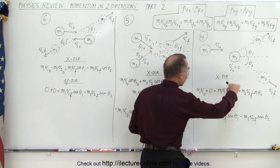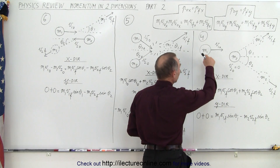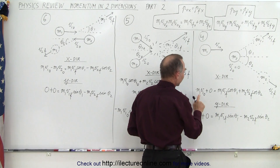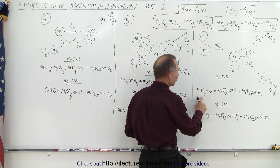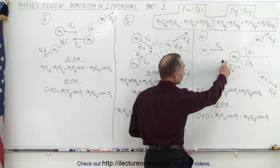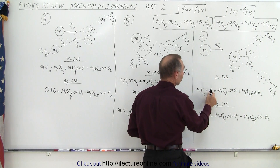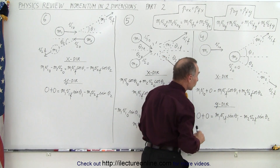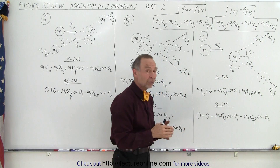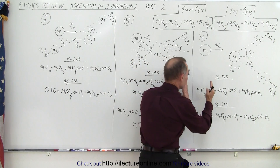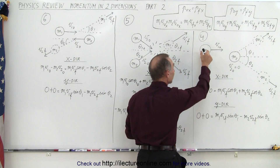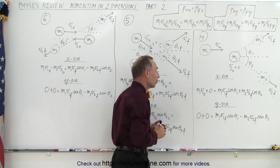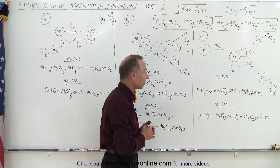In the x direction, notice that only one object is moving to the right, so it has its initial momentum of M times V. The second object is not moving, so there's no momentum associated with that. So on the left side of the equation, we get the initial momentum, which is only the momentum of the first object.